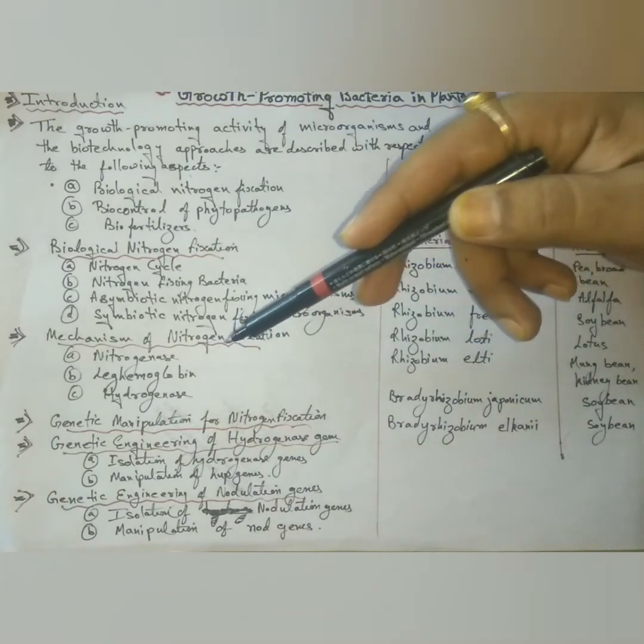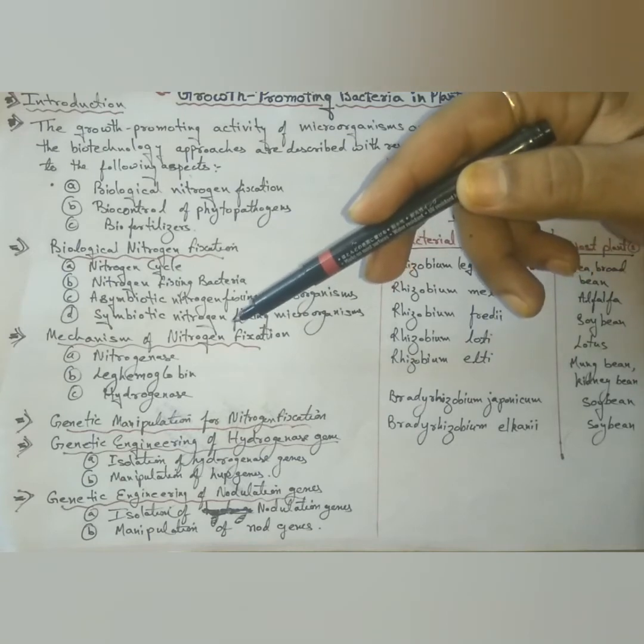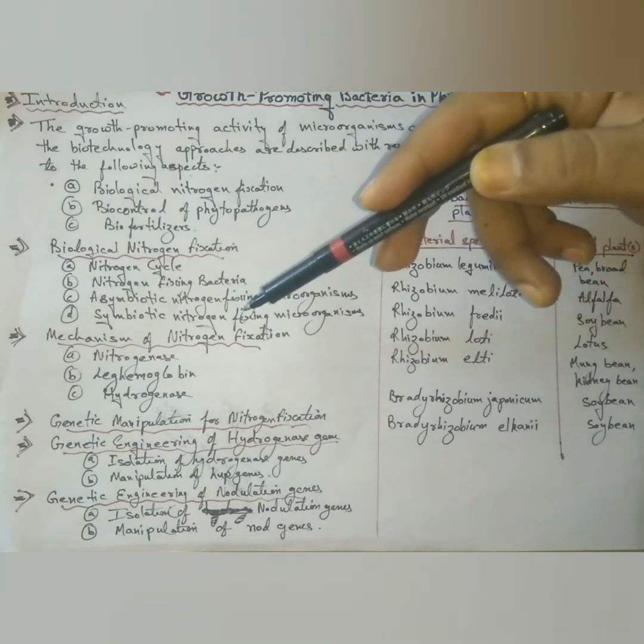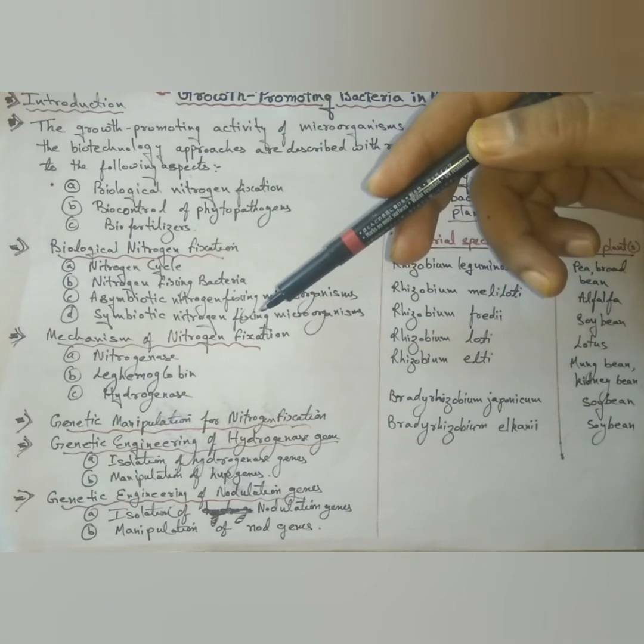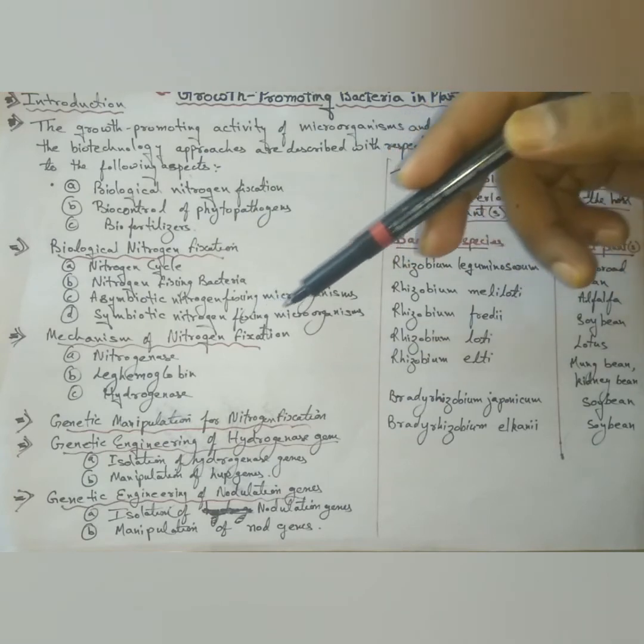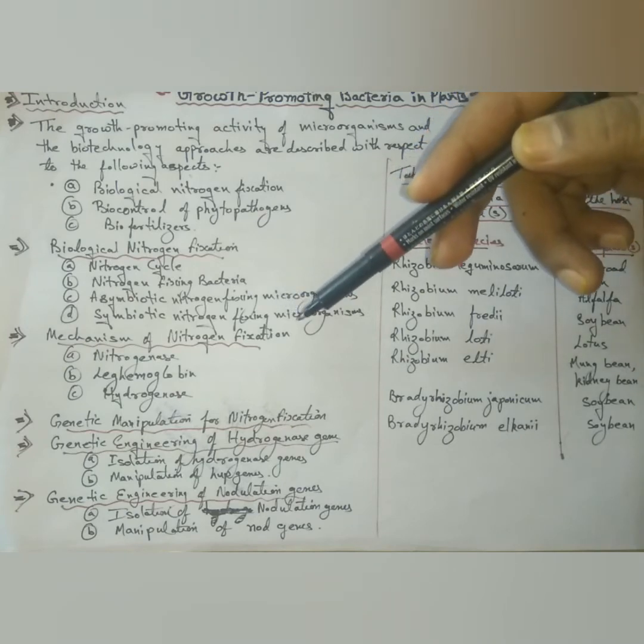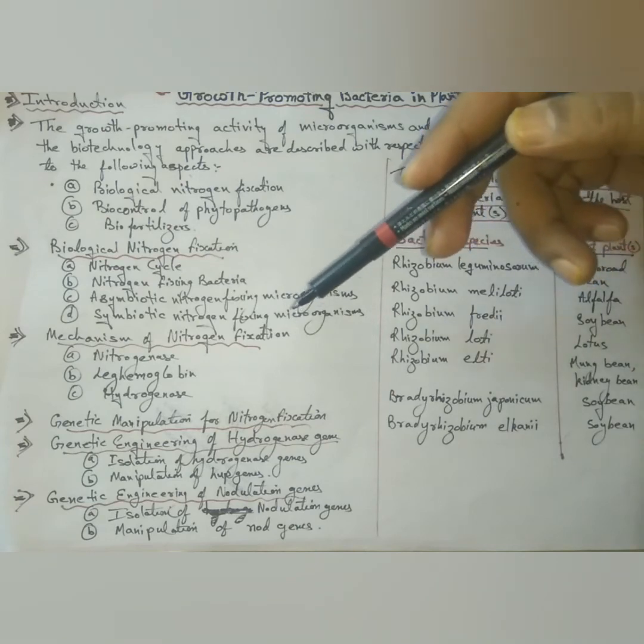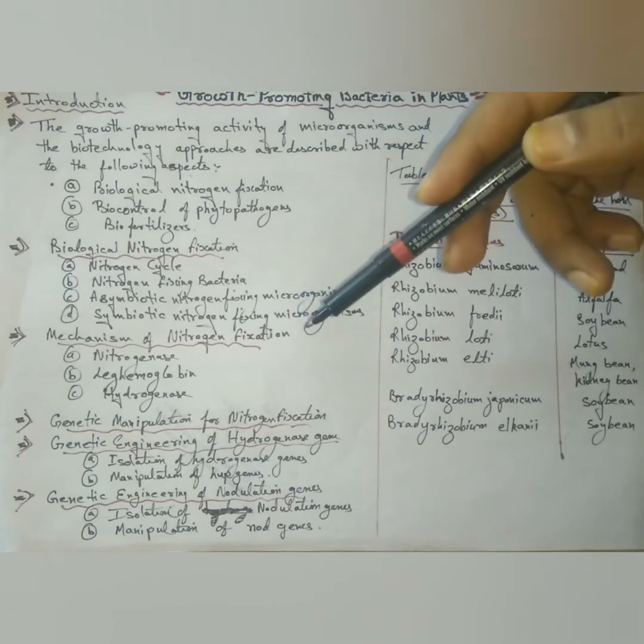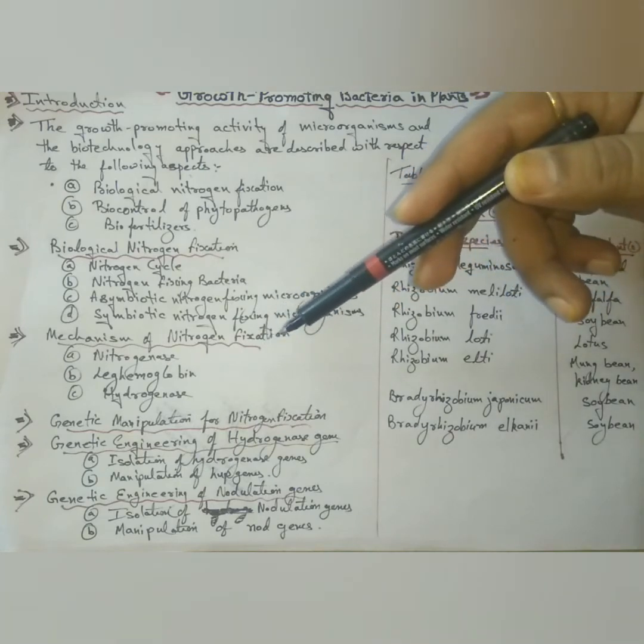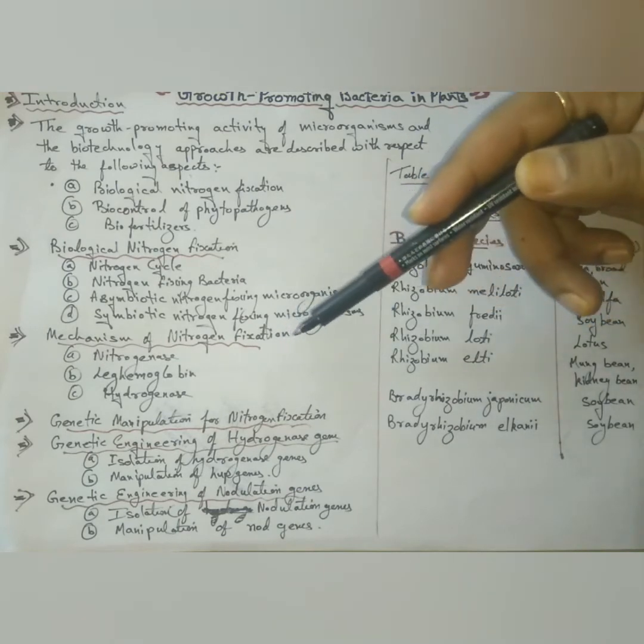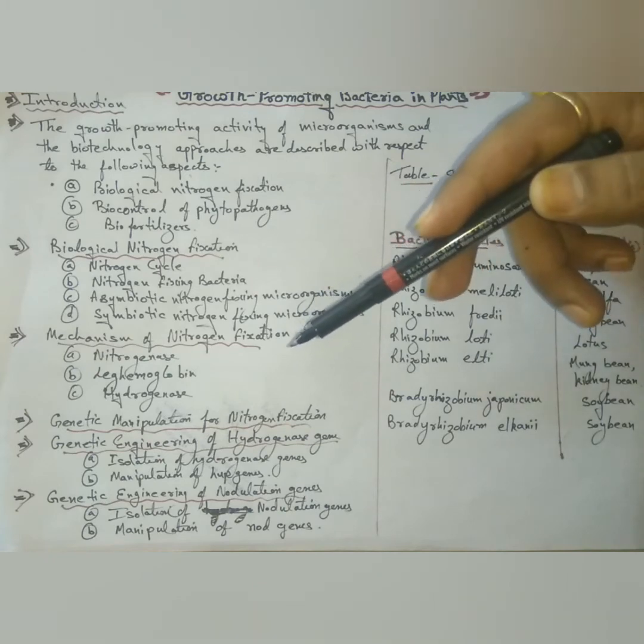Nitrogenase is a complex enzyme containing two oxygen sensitive components. Component one has two alpha protein subunit and two beta protein subunit, 24 molecules of iron, two molecules of molybdenum and an iron molybdenum cofactor. Component two possesses two alpha protein subunit and a large number of iron molecules. Component one of nitrogenase catalyzes the actual conversions of nitrogen to ammonia while component two donates electrons to components.